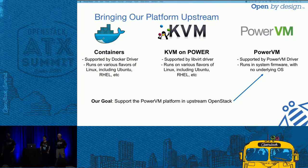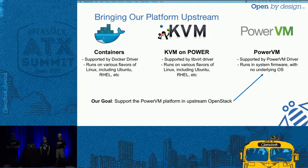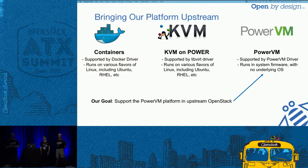What we were looking to do when we started our upstream driver work — since we work for Power Systems — we actually have three hypervisor or workload types you can run on Power Systems. The first is containers, supported by the Docker driver. It runs a variety of Linux flavors such as Ubuntu, RHEL, and SUSE. We also have KVM, just like KVM on x86 chips, supported by the upstream libvirt driver.